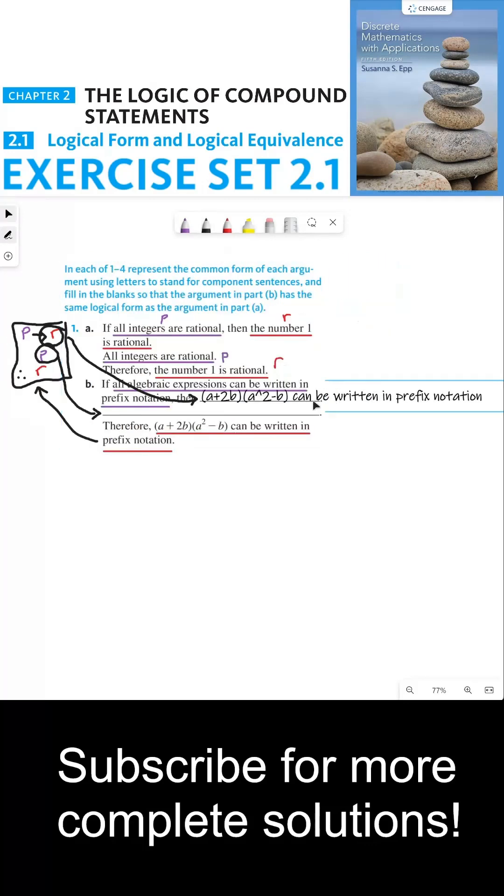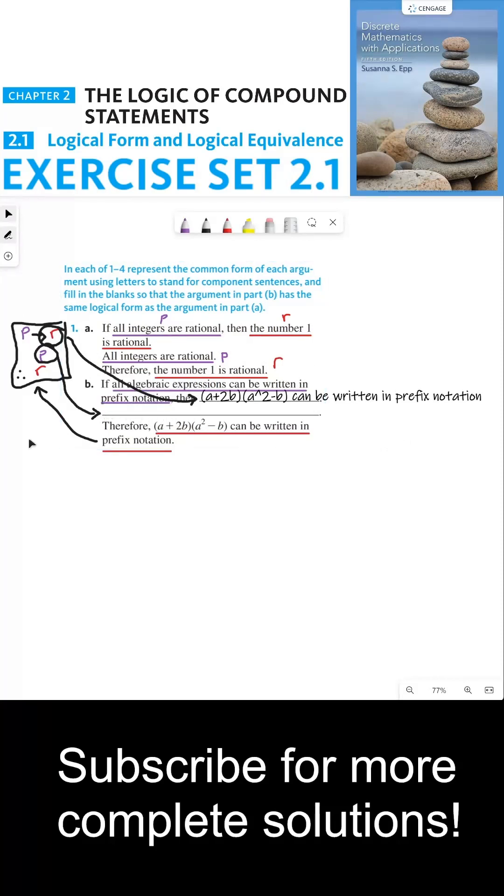It's kind of hard for me to fit this in here, but I put the red statement in this first blank: 'a+2b×(a²-b) can be written in prefix notation'—whatever that means. That needs to be the conclusion of this if-then statement so that part b can represent the same logical form as part a.